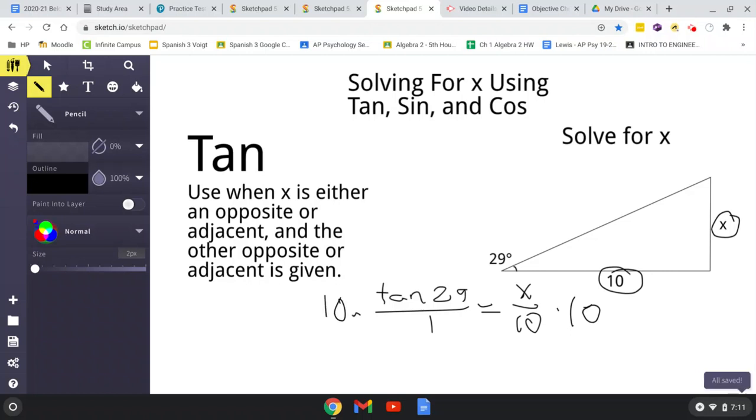Now, none of these problems had the x in this denominator. But all you would do if x was in the denominator is you would take this number and divide by tan. But that's not our situation here. So, our situation, just to solve for x. We would have tan of 29 times 10.